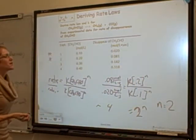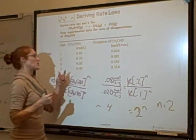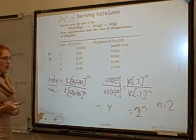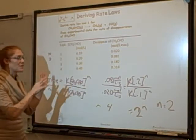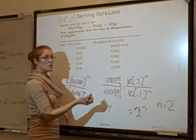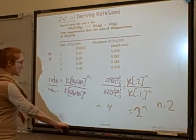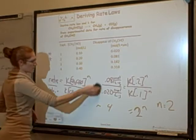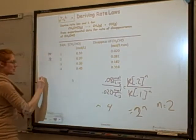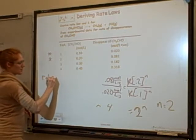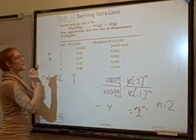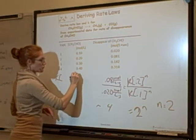We confirmed the order is 2. We could have also reasoned it out by noting we doubled the concentration and quadrupled the rate. Sometimes you don't have such easy numbers, so you actually have to solve it this algebraic way. Now that we have the order, we can solve for k. I know that rate equals k times the concentration of CH3CHO to the power of 2.